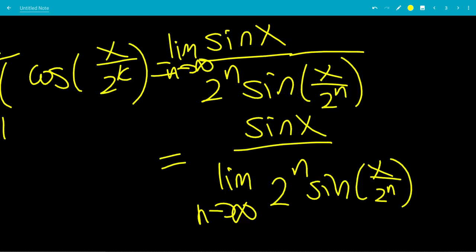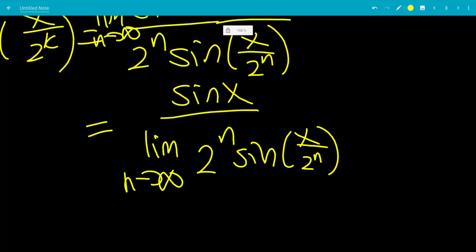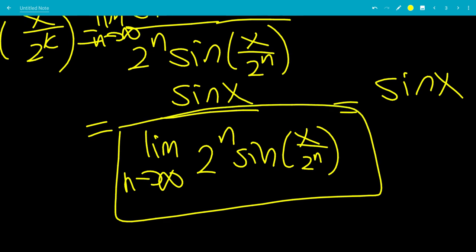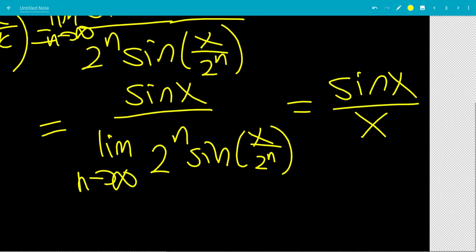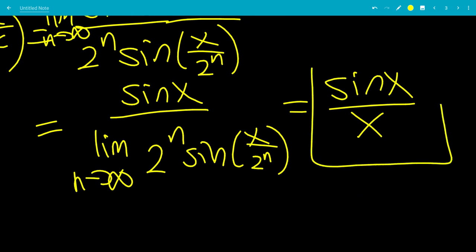So the numerator is sine x and the denominator limit is x. Therefore the limit of the infinite product equals sine x over x. That is the end of the video.